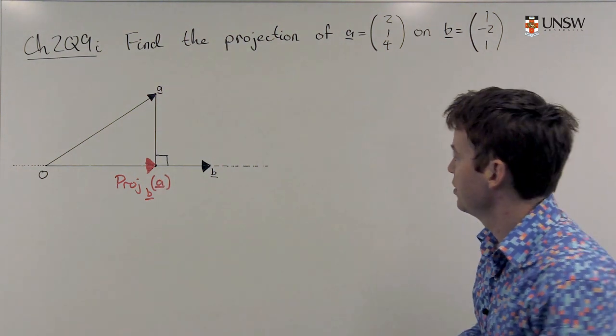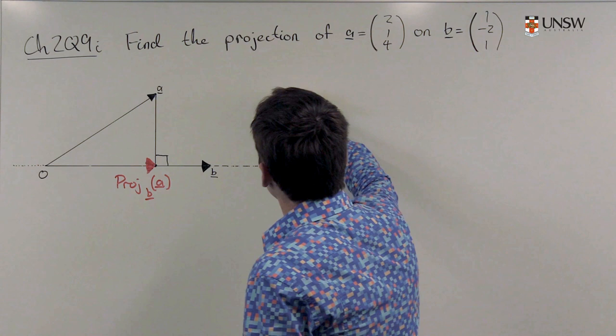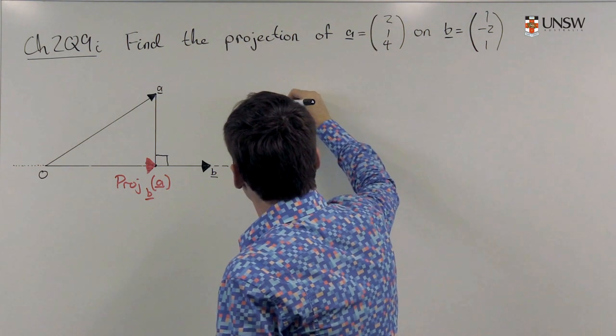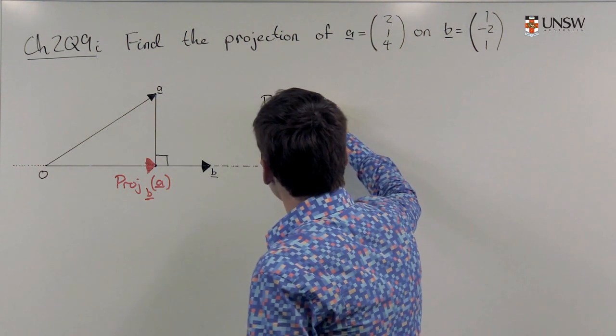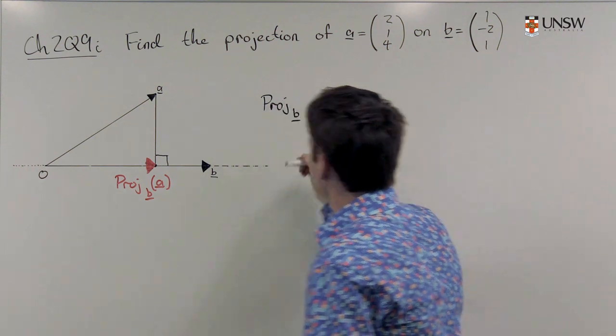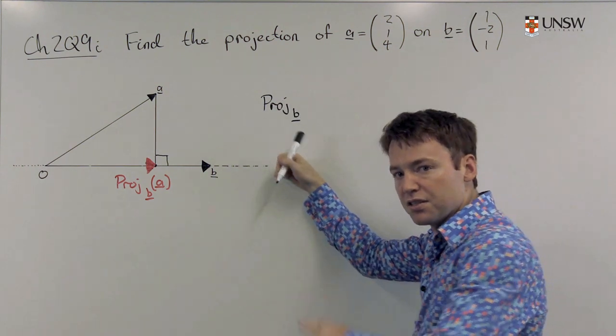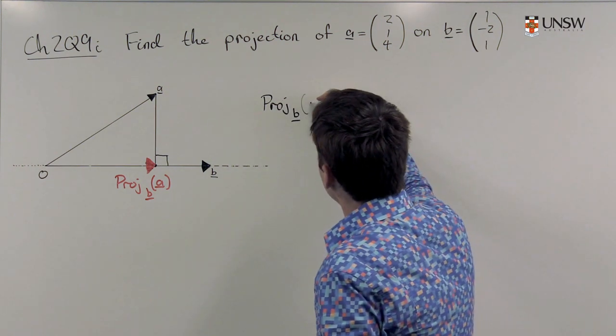You find the projection like this. The projection onto b (b is written slightly lower as a subscript) of a